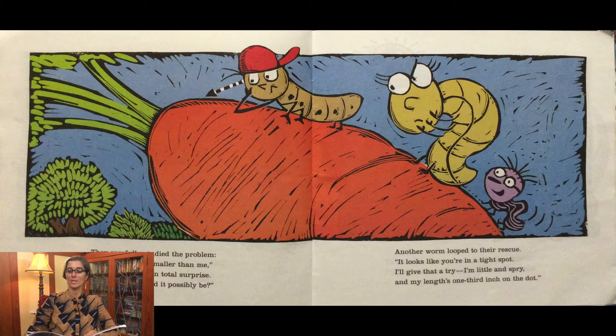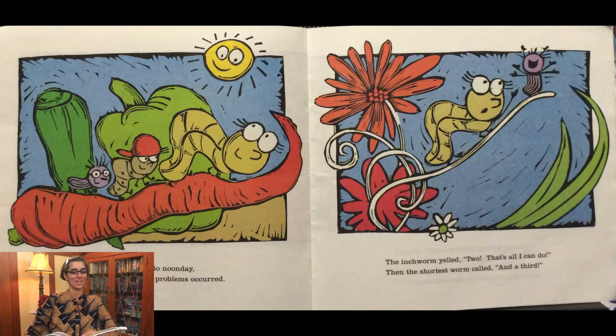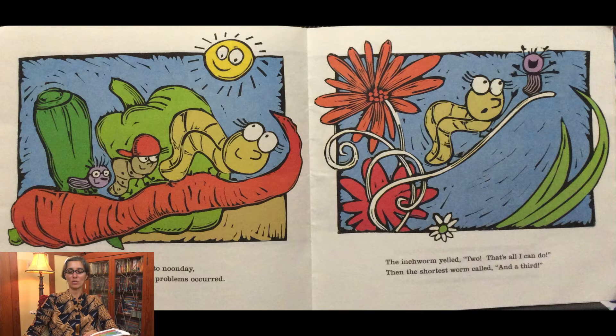And another worm looped to their rescue. It looks like you're in a tight spot. I'll give that a try. I'm little and spry, and my length's one-third inch on the dot. The trio looped on into noonday, quite pleased. No new problems occurred. The inchworm yelled, two, that's all I can do. Then the shortest worm called, and a third.